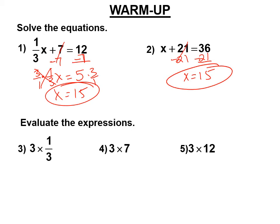Now we're going to be multiplying fractions. 3 times one-third is 3 over 3, also known as 1. And 3 times 7 is 21, and 3 times 12 is 36.